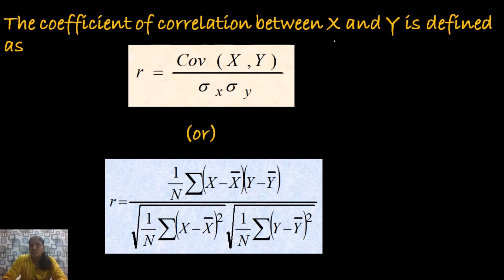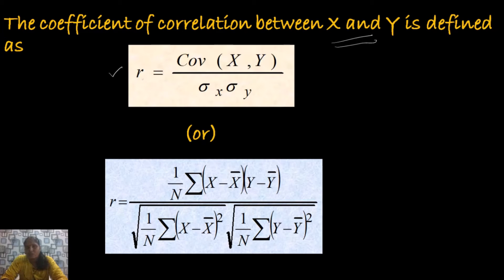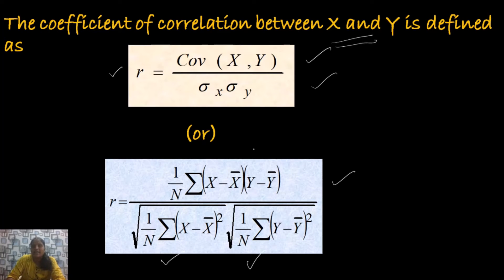The coefficient of correlation between the two variables x and y is defined as R is equal to covariance between x and y over the product of standard deviations of x and y. By substituting the formula for covariance and standard deviations, we get the formula: 1 over n times sigma of (x minus x-bar)(y minus y-bar), divided by the square root of [1/n times sigma(x minus x-bar) squared] times the square root of [1/n times sigma(y minus y-bar) squared].